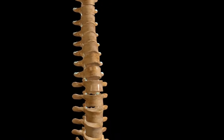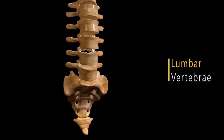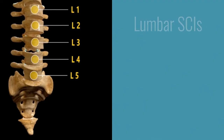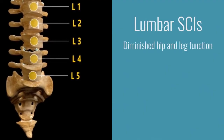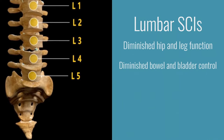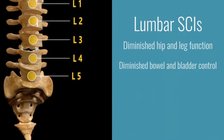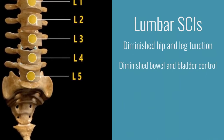The lumbar vertebrae are the next five vertebrae located in the lower back. Injury to this area may result in diminished hip and leg function. Voluntary control of the bowel and bladder are also diminished or lost.